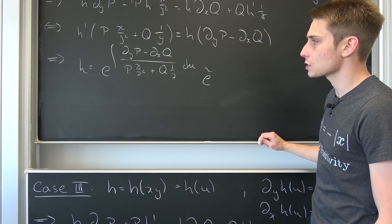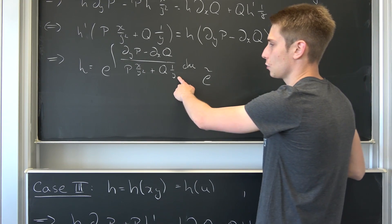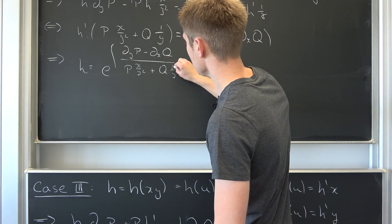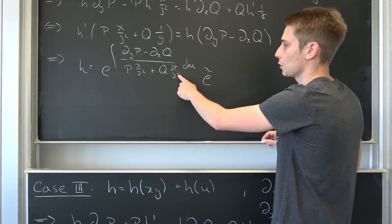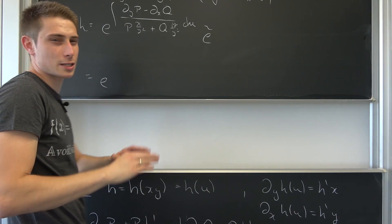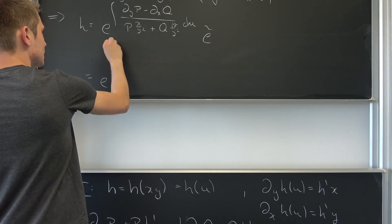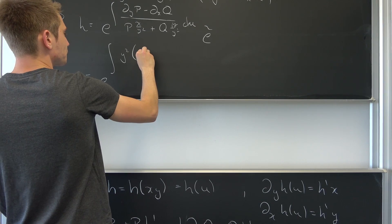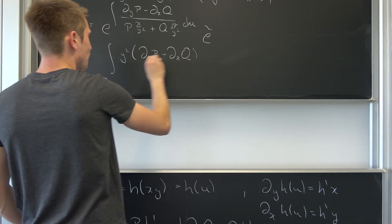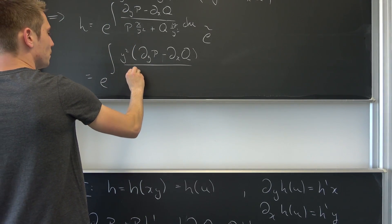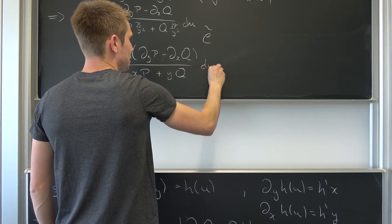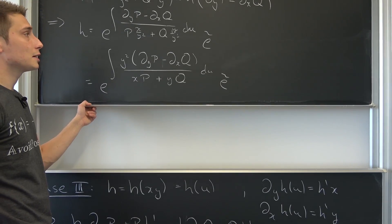We can do some more simplifications — for example, factoring out one over y squared on both terms in the denominator. That leaves us with P times x plus Q times y all over y squared. Taking the reciprocal brings y squared to the top, leaving us with a final simplified formula: H equals e to the integral of (y squared times (del_y P minus del_x Q)) over (xP plus yQ) du, times e^C.